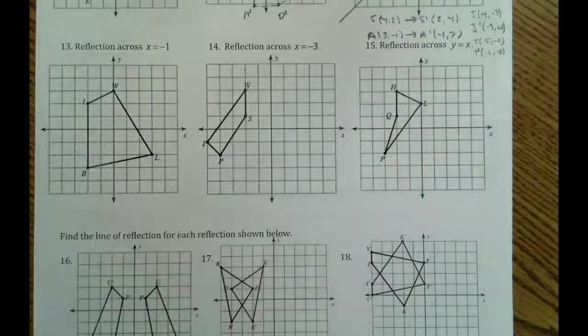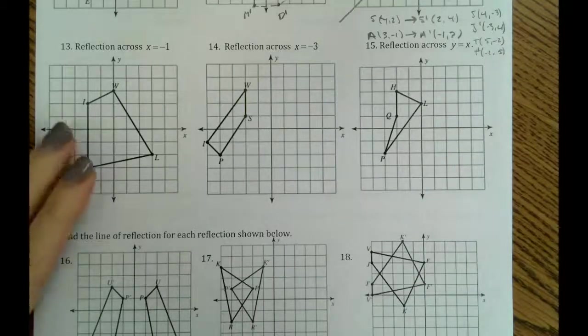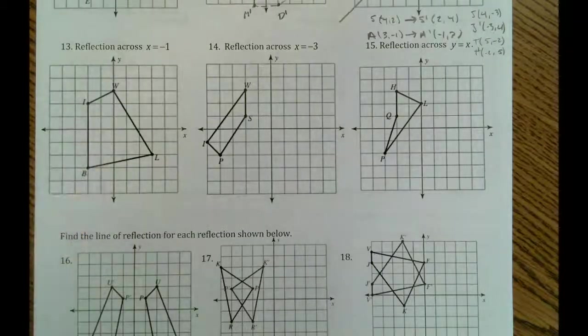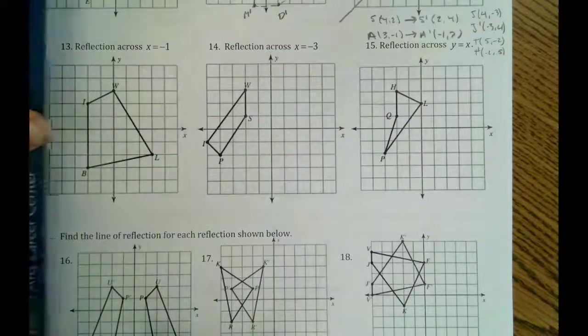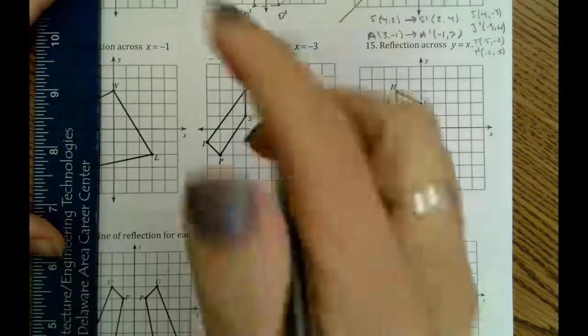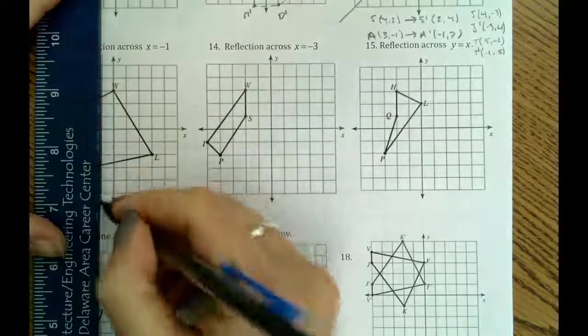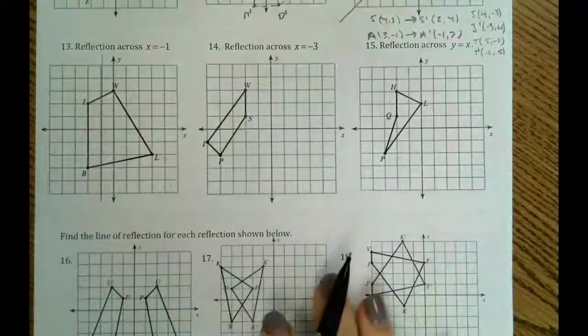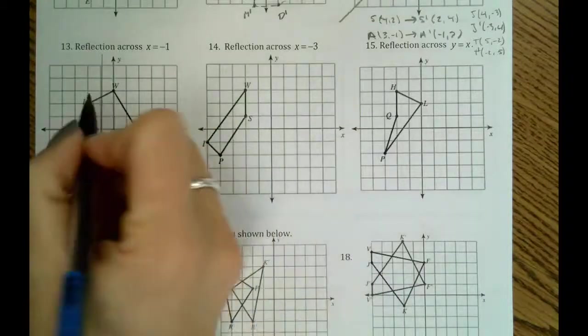Okay group, this video will be 13 through 18. So here we want to reflect across the line x equals negative 1. So we're going to go ahead and draw that line, x equals negative 1, and we want to reflect over that. So all we have to do is count.